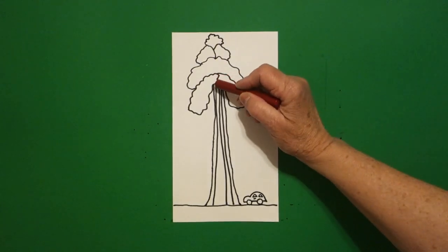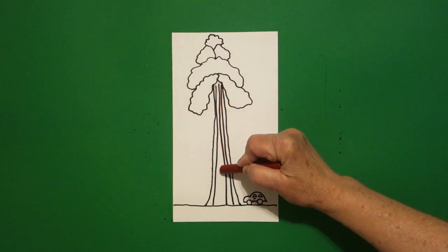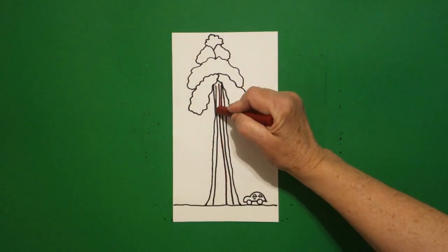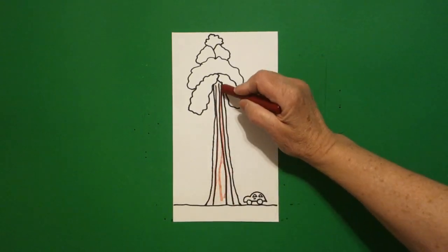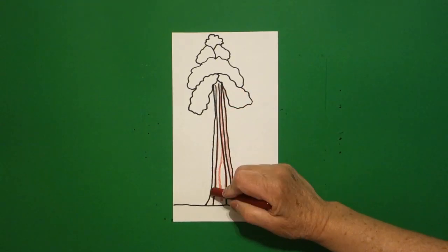The first thing I'm going to do is just add some red stripes coming down on my redwood.